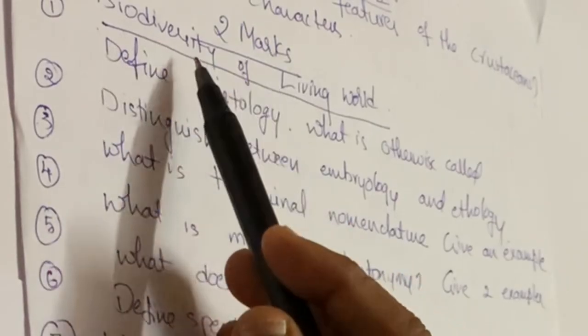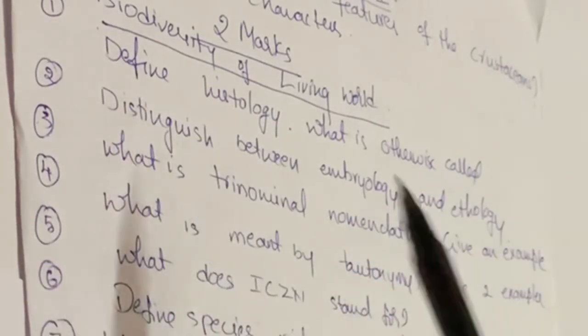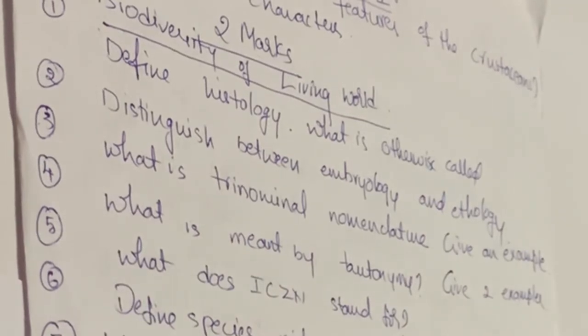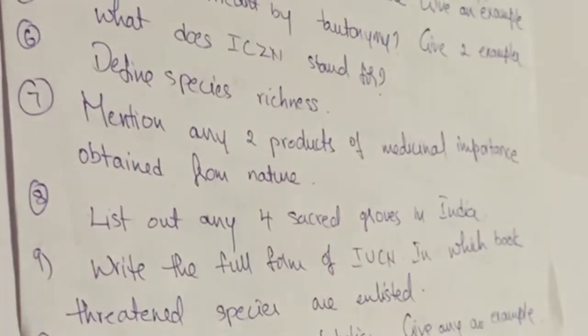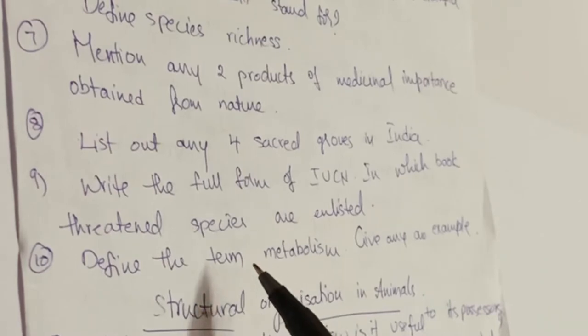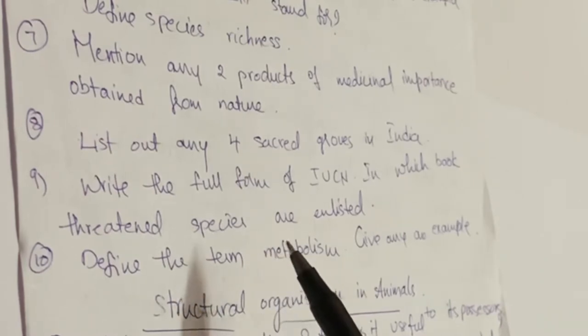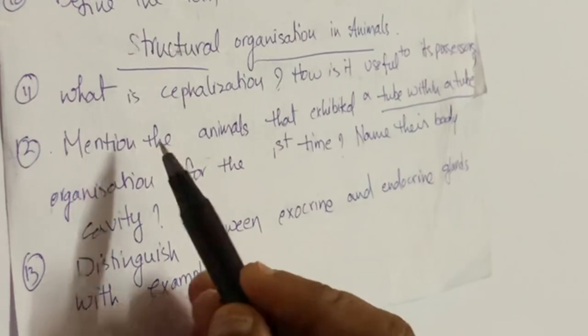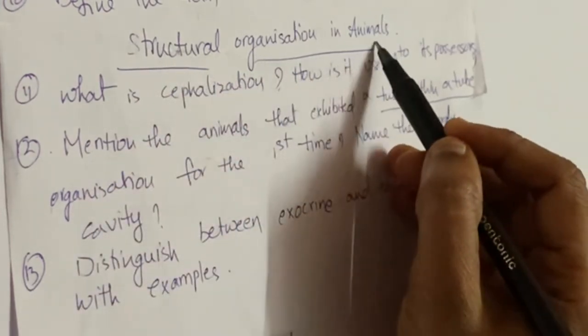The important questions for two marks are: 10 questions from the first chapter, so learn all these questions thoroughly. Take a screenshot and note them down. This is the second chapter, Structural Organization in Animals.